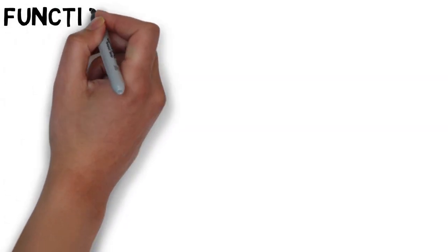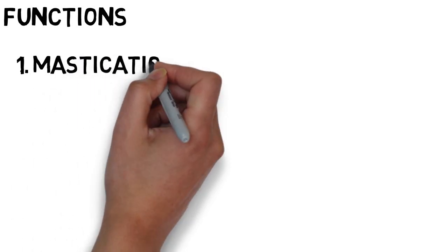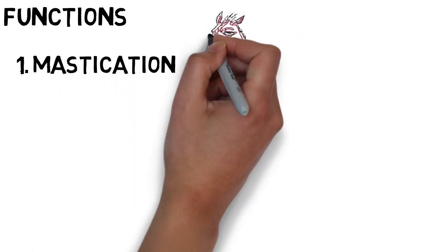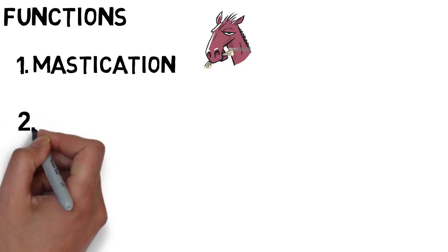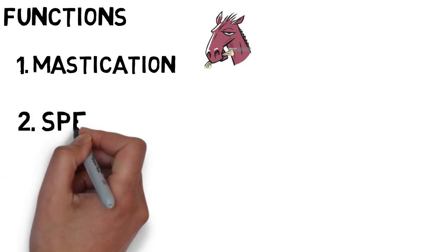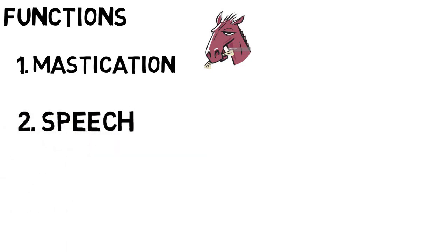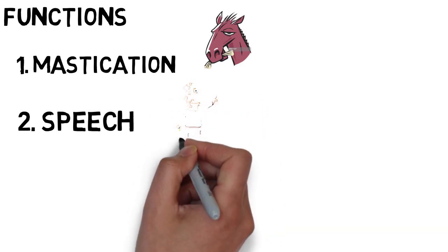When we talk about the functions that our teeth perform, there are three important ones. The first is a very common one that we all know: the masticatory function — the chewing function. This is the most important function of our teeth.